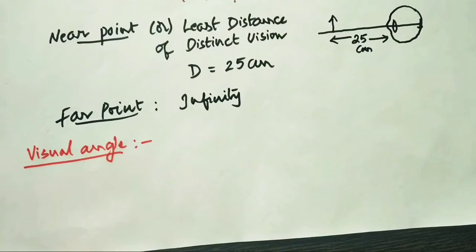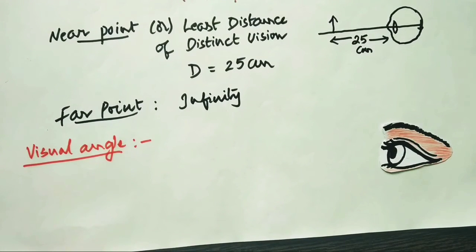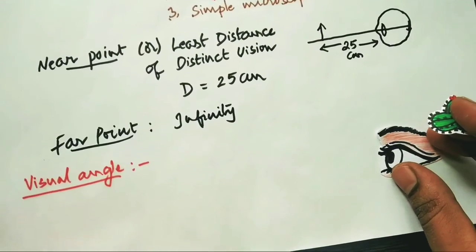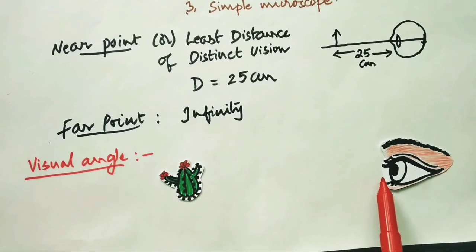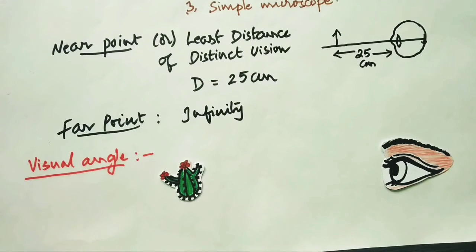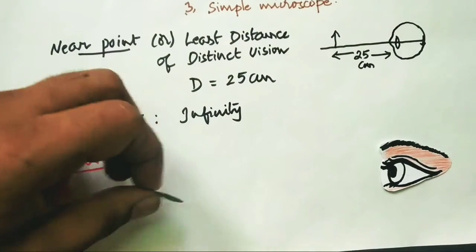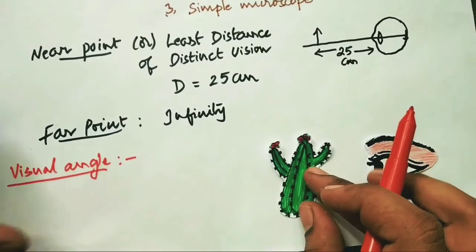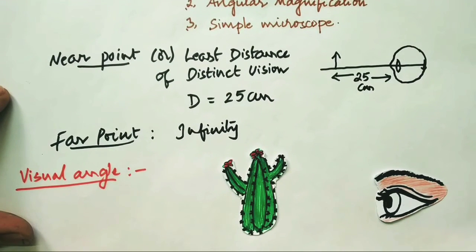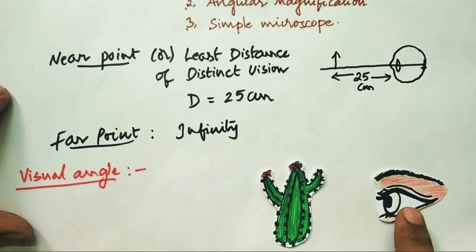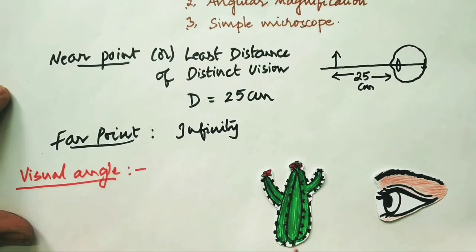Visual angle is the angle subtended at the eye, or any optical instrument, by an object. When an object is very far from the eye, the angle subtended is minimum, so the object appears smaller. When the same object is brought close to the eye, the angle subtended is larger, and the object appears bigger in size. The size of the object as perceived by the eye depends on this visual angle.